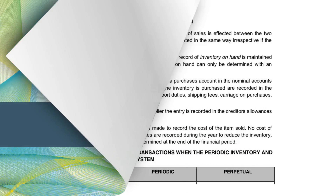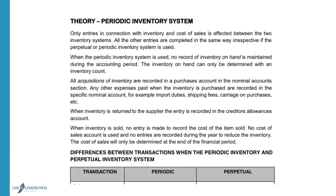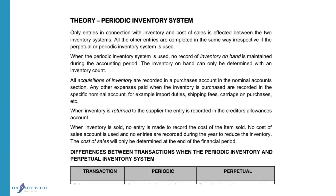Good morning. We will pay attention to the periodic inventory system today — only entries in connection with inventory, meaning when inventory increases or decreases and cost of sales is affected when the two different inventory systems are used.